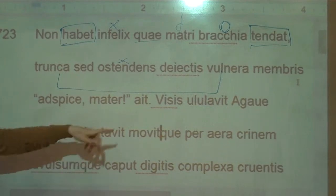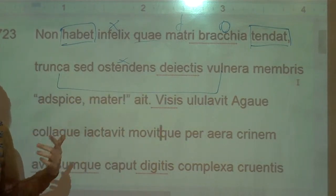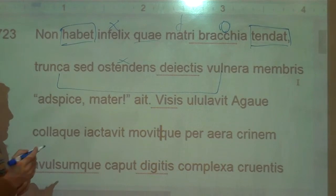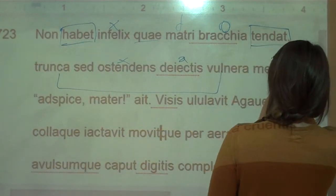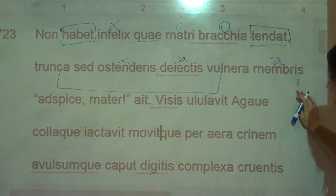Due to - this is sort of like, it could be an ablative absolute maybe, but it's probably just an ablative of cause. Due to his delectis membris, his torn off limbs, so basically he's wounded because she tore his arms off, obviously.